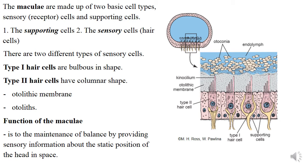Supporting cells support the vestibular hair cells. Vestibular hair cells sit on nerve endings, similar to the ampullary crest hair cells. Supporting cells may be two types: type 1, which are bulbous in shape, and type 2, which have columnar shape. Both types of cells contain stereocilia on their apical surface, which reach the otolithic membrane. The otolithic membrane contains otoliths or otoconia, presented by 3–5 micrometer crystals of calcium carbonate.